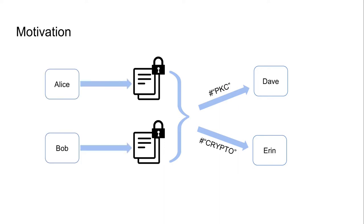Additionally, we want to allow two other parties, Alice and Bob, to be responsible for providing the different documents. Alice would be in charge of providing the first file and Bob responsible for providing the second file. We additionally require that the evaluation of Aaron and Dave happens in a privacy-preserving way, meaning they should only learn how many times their requested word appears in both documents together and nothing beyond that.